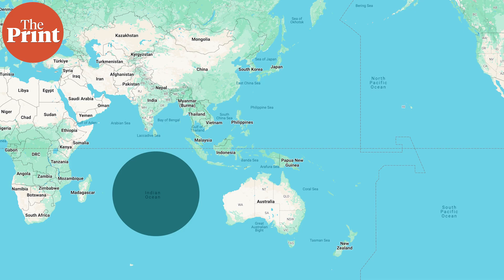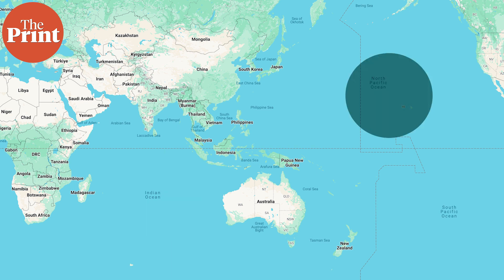While atmospheric rivers exist around the world, like in the Indian Ocean, some of the more strong atmospheric river systems form in the Pacific Ocean, including the Pineapple Express.